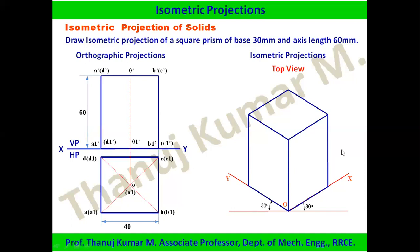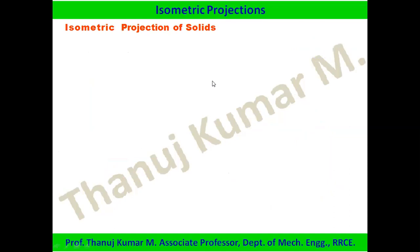In computer-aided drawing, you can first draw to actual scale — 40 mm, 40 mm, 60 mm — set the object, then use the scale command and reduce the scale by 0.8164. That is how isometric projections of solids are drawn. Now let us go to the next example.